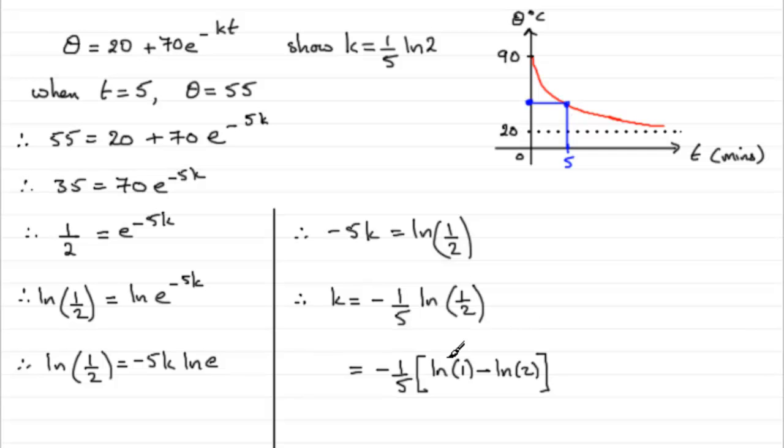And we should know that the natural log of 1 or the log of 1 in any base is 0. So what we have is minus 1 fifth then multiplied by minus the natural log of 2. And can you see that this comes out to 1 fifth natural log of 2. So it equals 1 fifth natural log of 2. What we had to prove.